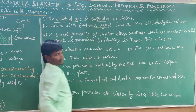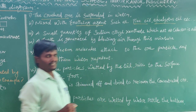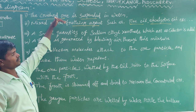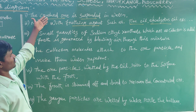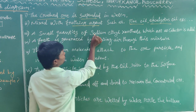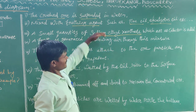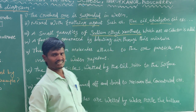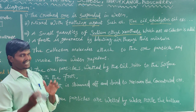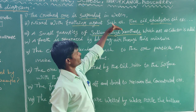The frothing agent is very important. The frothing agent includes pine oil, eucalyptus, and similar substances. We add a small quantity of sodium ethyl xanthate. Sodium ethyl xanthate acts as a collector — if we collect the heavy metals, it is a key factor.